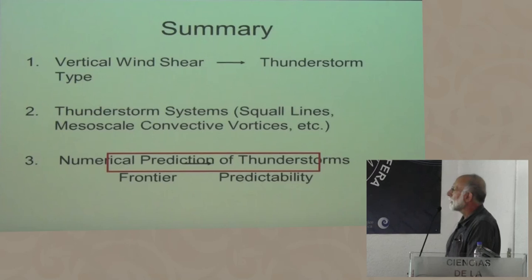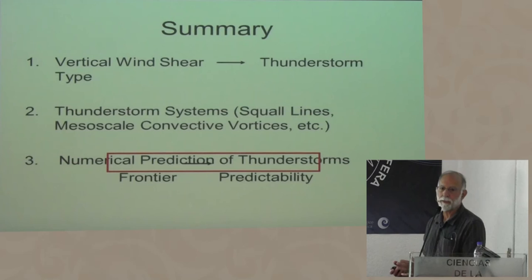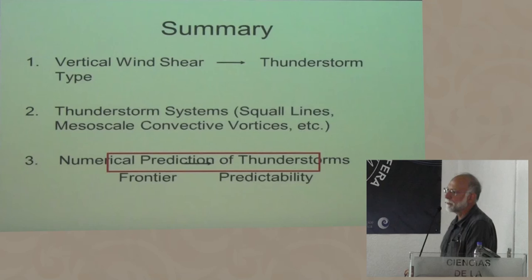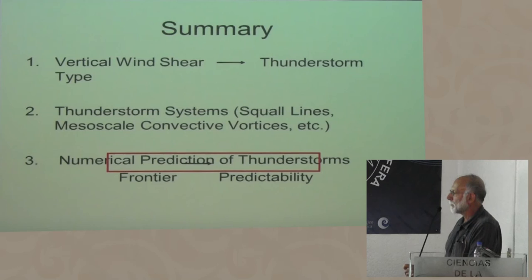To summarize what we talked about: going back to the early elements of severe convection — the elementary convective cell — and how wind shear determines whether it'll keep on regenerating itself, which is the squall line idea, or whether a supercell would be created. From there we talked about groups of cells, systems, squall lines, mesoscale convective vortices, and the special properties of those when they act in concert. Finally, I took you into modern research on how to forecast thunderstorms using mesoscale models run at convection-permitting resolutions, using modern data assimilation systems and ensemble techniques.